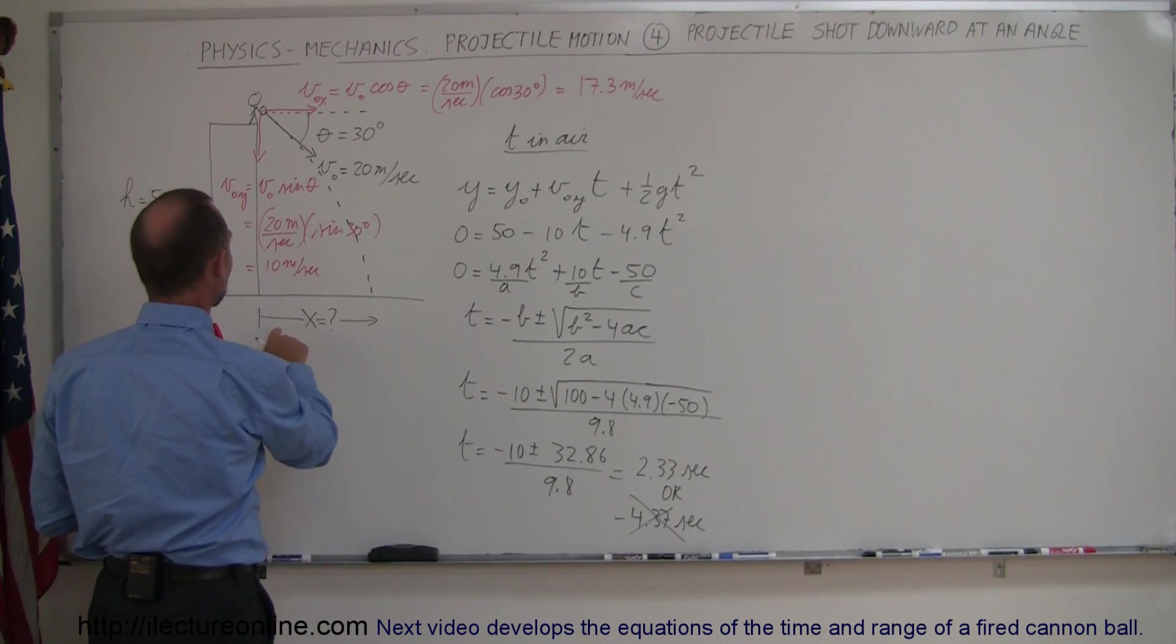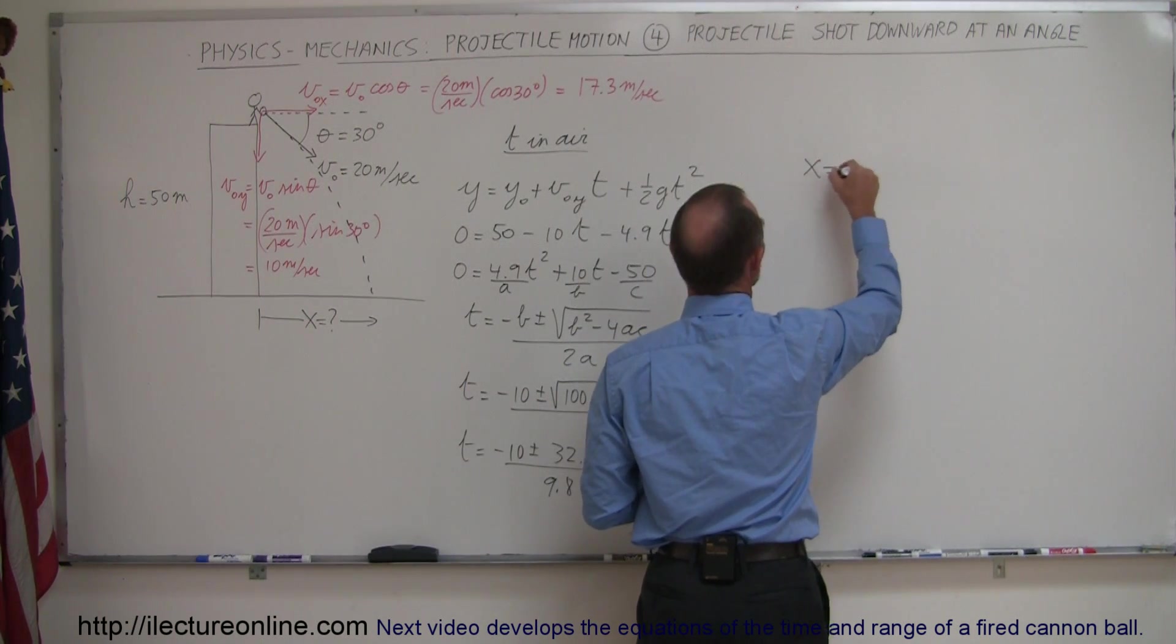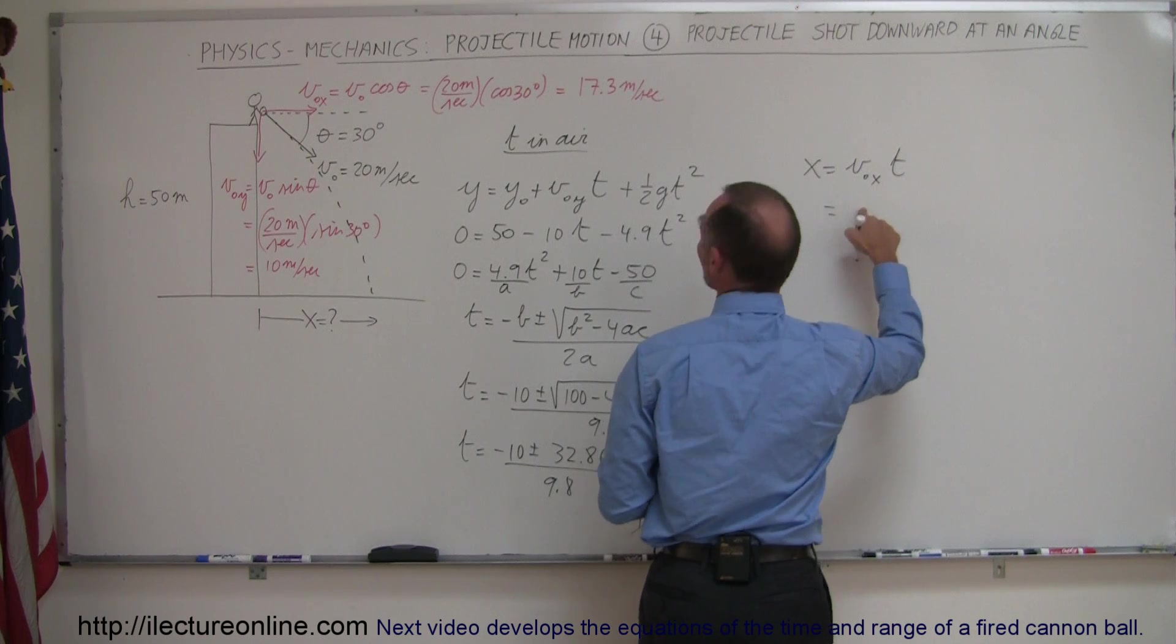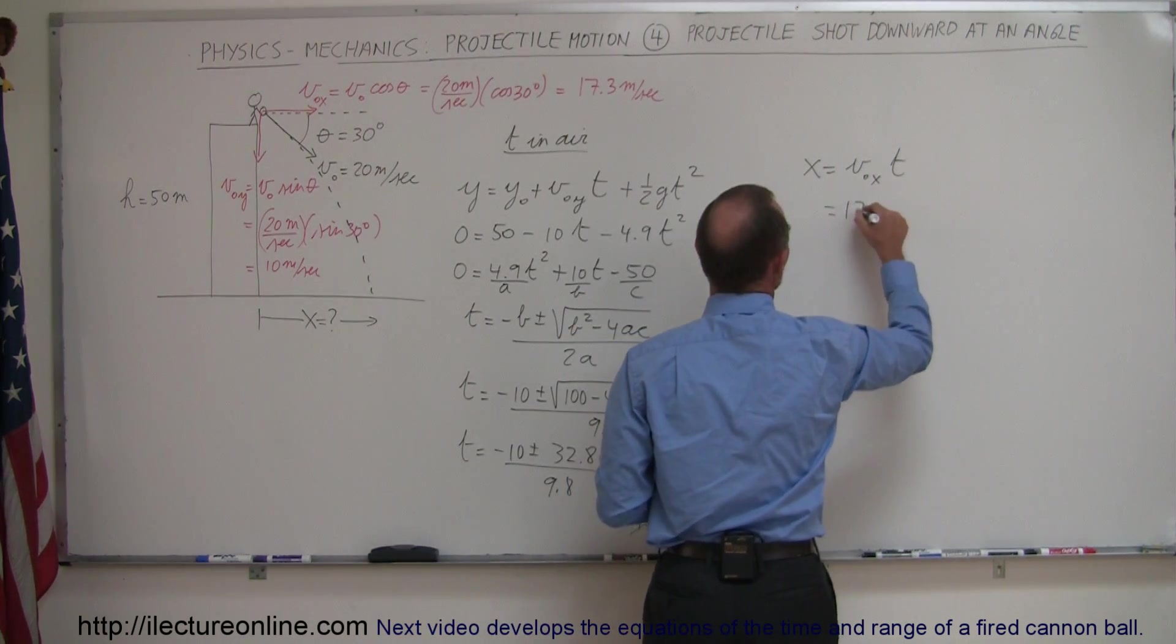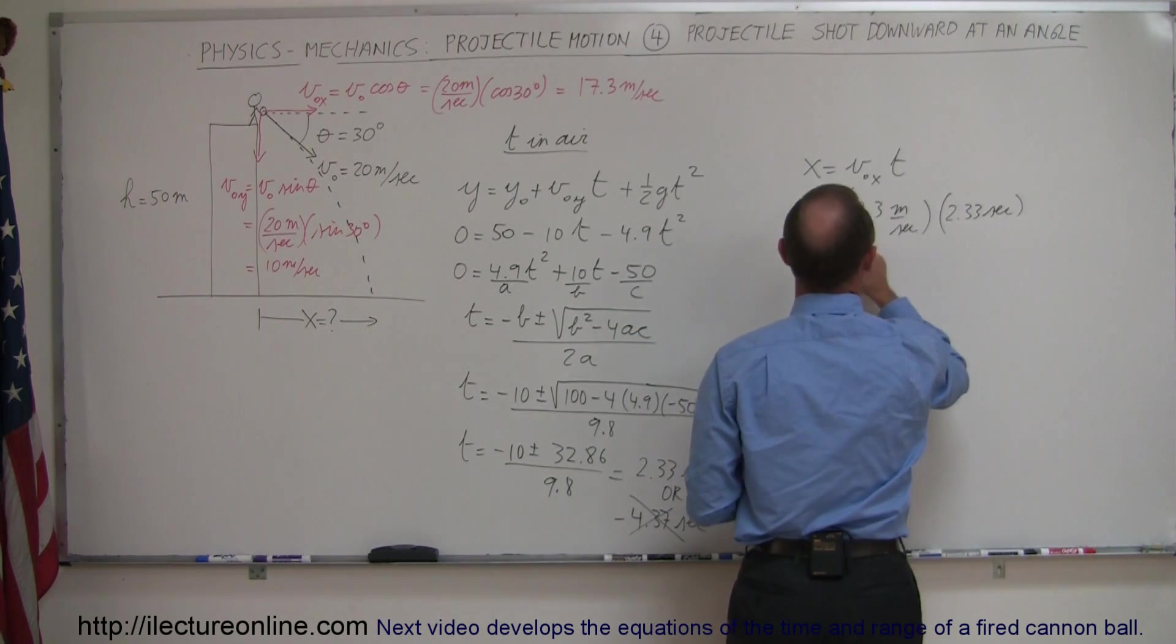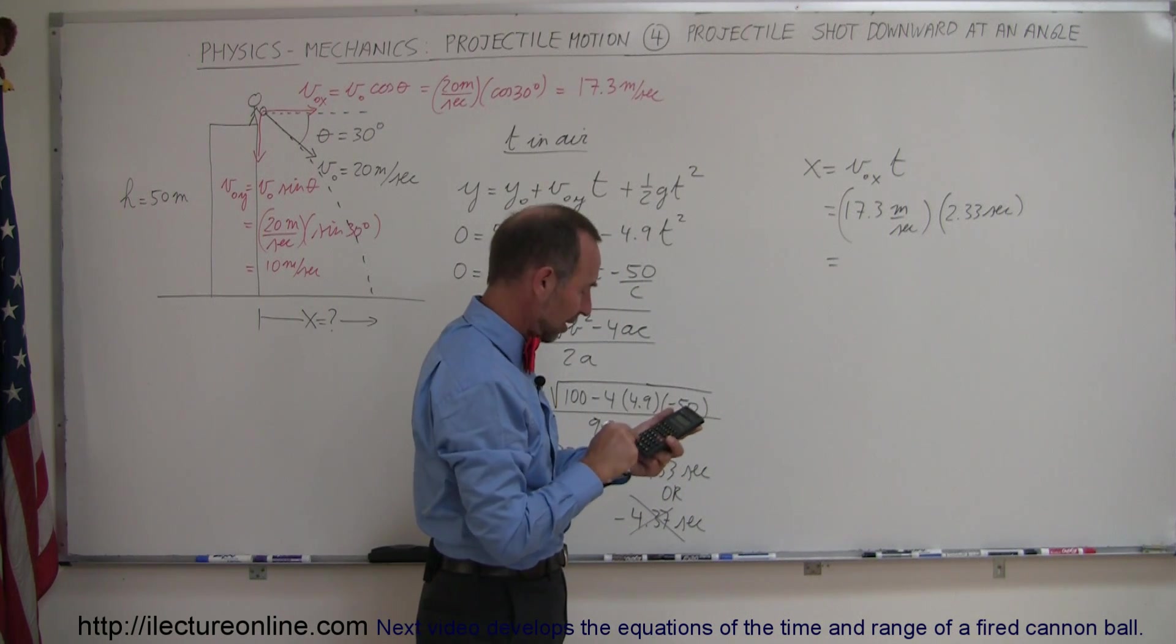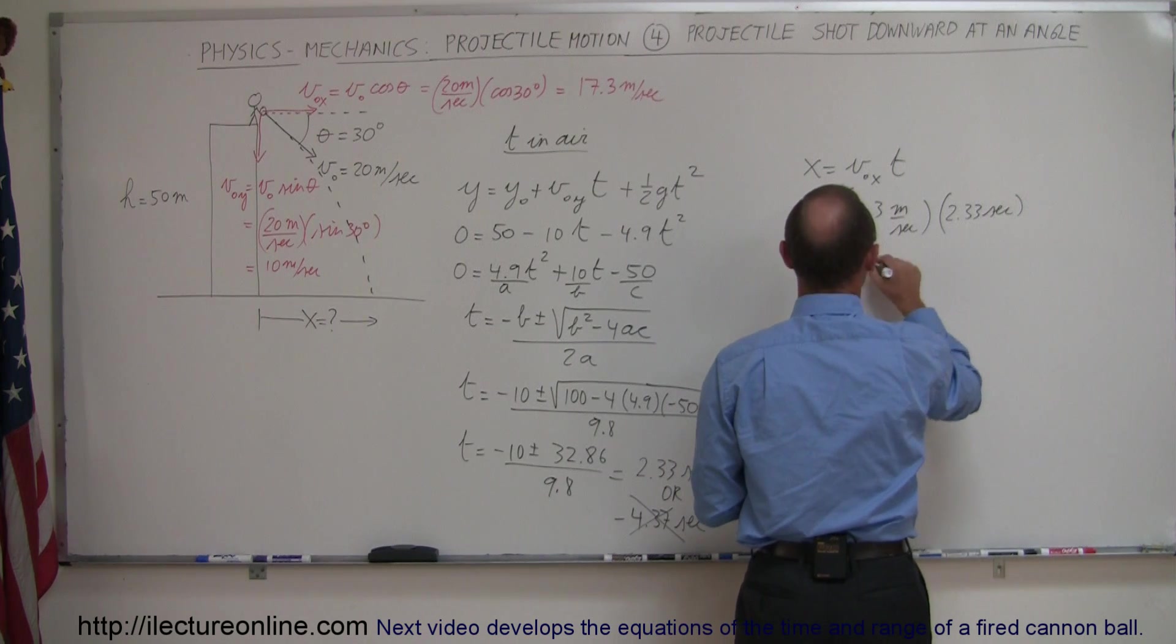But of course we're not going to consider that. There's our true answer for time in the air, and now our next attempt here would be to find the distance. For that we use the equation x equals the initial velocity in the x direction times the time in the air. Initial velocity in the x direction right here, 17.3 meters per second, time we got to be 2.33 seconds.